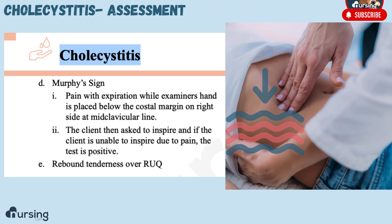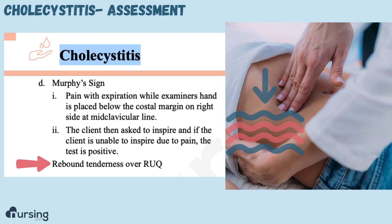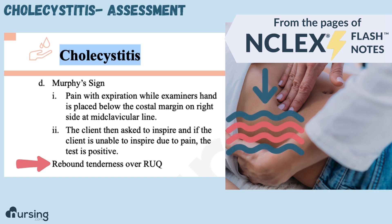Lastly, we also assess for rebound tenderness. This is when you press on the right upper quadrant and then release, and the pain is actually worse when you release than it was with the initial pressure.